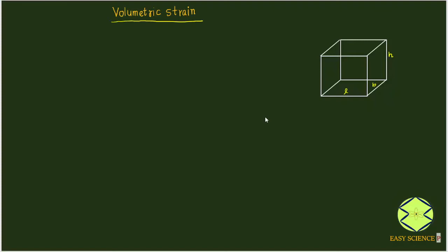If we subject this three-dimensional object to stresses along the x direction, along the y direction, and along the z direction, this member is subjected to stresses along x, y, and z direction as you can see from the picture. Due to application of these stresses, there will be a change in the volume of the object.